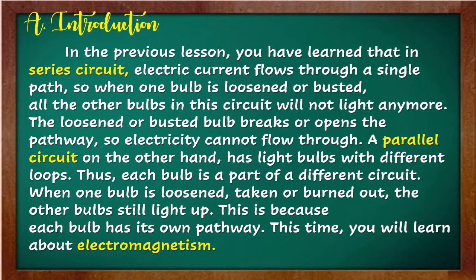In the previous lesson, you have learned that in a series circuit, electric current flows through a single path. So when one bulb is loosened or busted, all the other bulbs in the circuit will not light anymore. The loosened or busted bulb breaks or opens the pathway, so electricity cannot flow through.